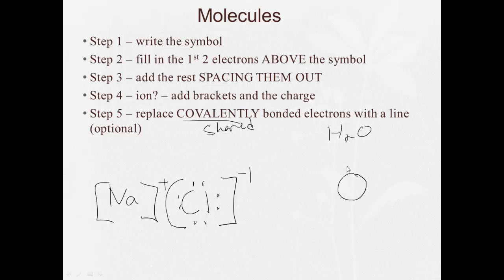So, here we have an oxygen. Oxygen has six valence electrons. 1, 2, 3, 4, 5, 6. Each hydrogen has one. So, here's the hydrogen with one. Here's the other hydrogen with one. So, these electrons here are being shared between the oxygen and the hydrogen, as are these. The other thing we can do is replace these covalently bonded electrons with a line. So, I can say O H H, but then I have to draw these other pairs back in.